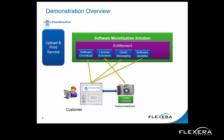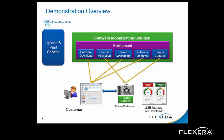We'll then show the ability for PhotosharePub to send direct messages and provide software and firmware updates directly to the client application. The application will periodically phone home to the back office system to see if there are updates available and will get access to them only if they are entitled to receive them. The final action you'll see is an example of a usage-based entitlement. In this case, the customer has purchased a plan to store up to 2GB of photos and print up to 500 pictures per month. The usage information will be collected, fed back to PhotosharePub, and made available to the customer in the customer portal.